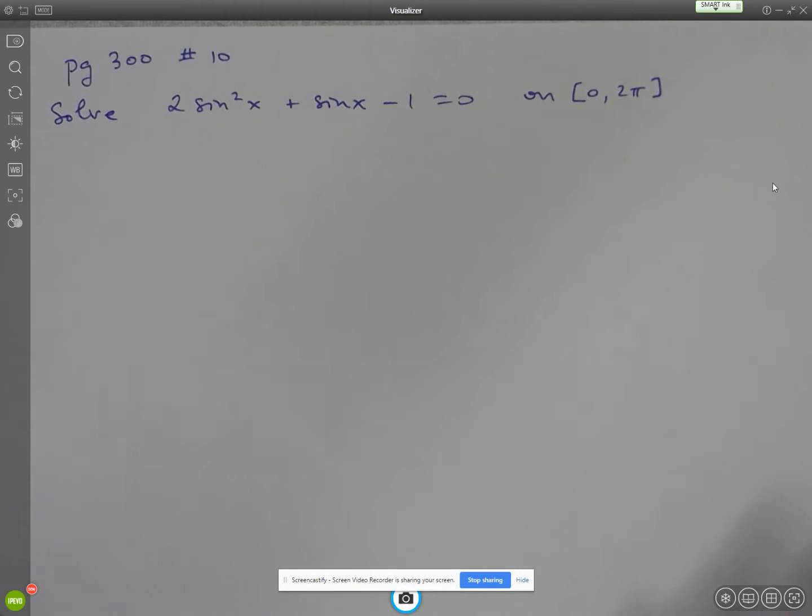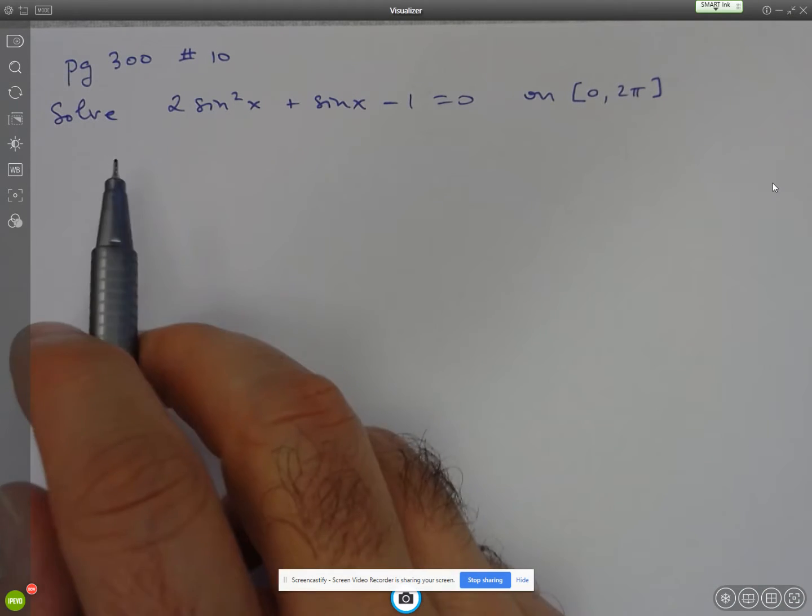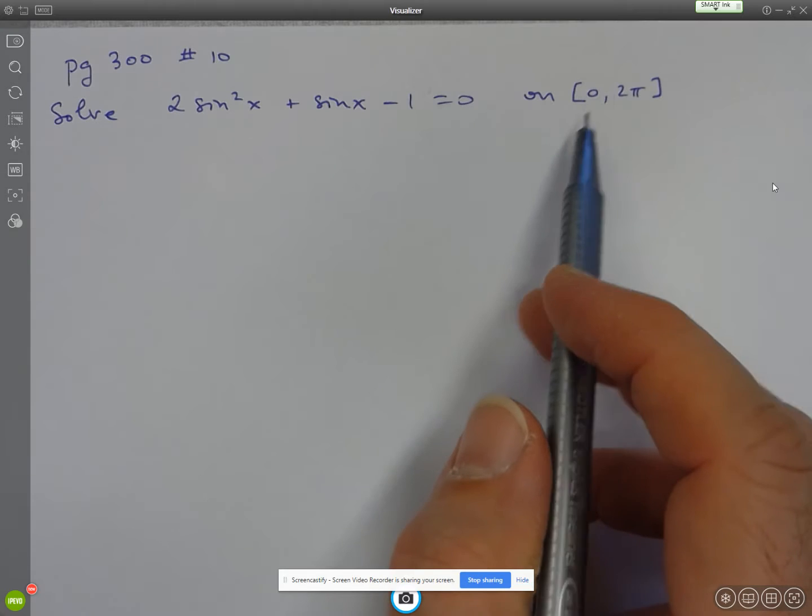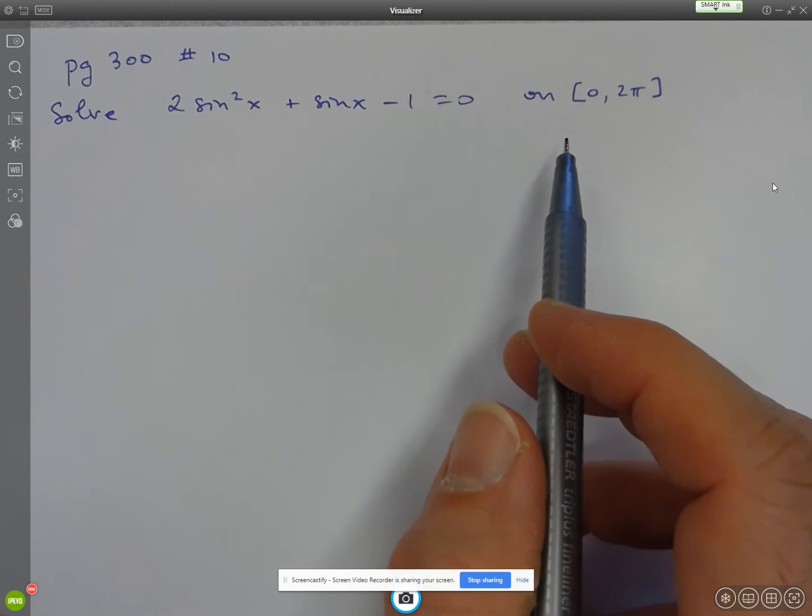Hi folks, we're going to take a look at number 10 on page 300. So they want us to solve this equation for x values between 0 and 2 pi.